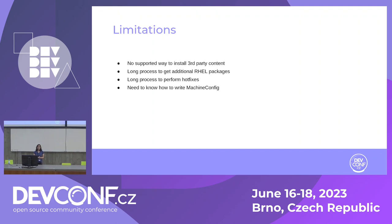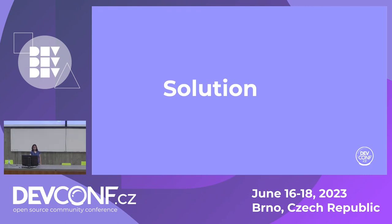The third limitation is performing hotfixes. For example, you have a new kernel with security fixes you want to apply on your cluster, but you cannot get it unless a new update ships. There is a new release process to go through, and then only the update happens — so everything takes time. These are the things that basically led to what we wanted to do, which is called CoreOS Layering.